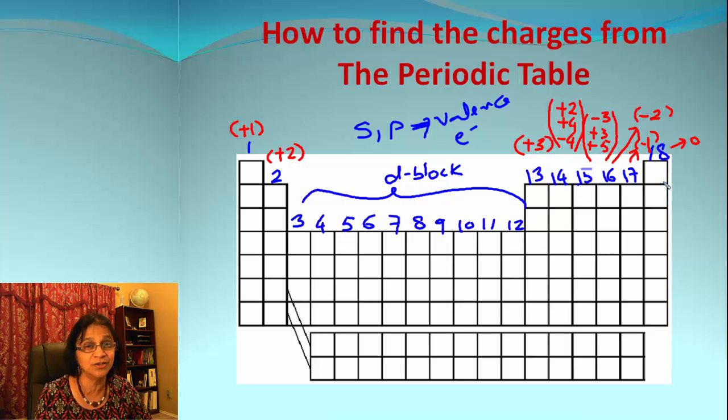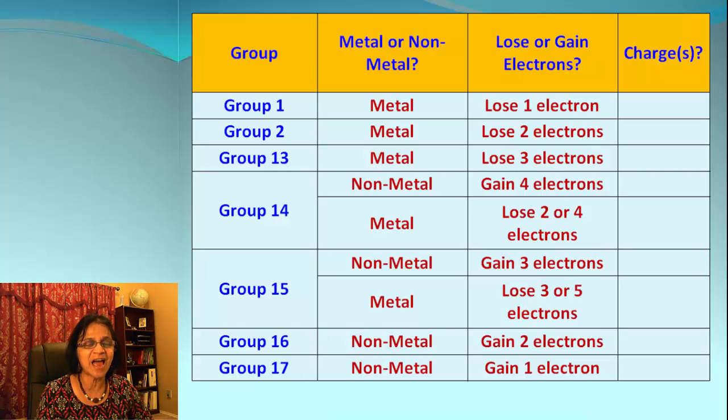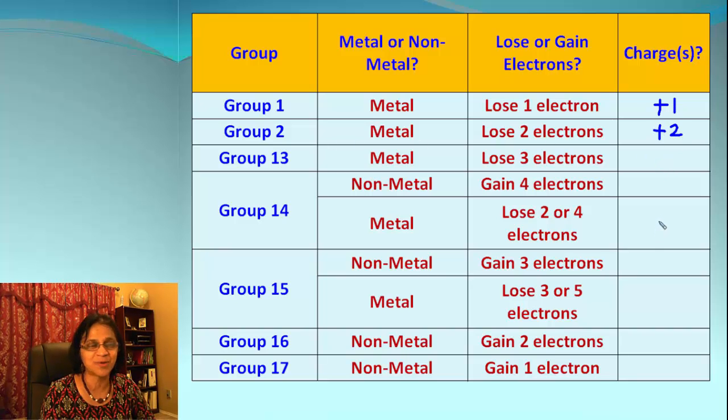So let's have picture in this table form. Group 1 are metals, they lose electrons, one electron, so charge is positive one. Group 2, losing two electrons, charge is positive two. Group 13 is losing three electrons, so it'll be positive three.